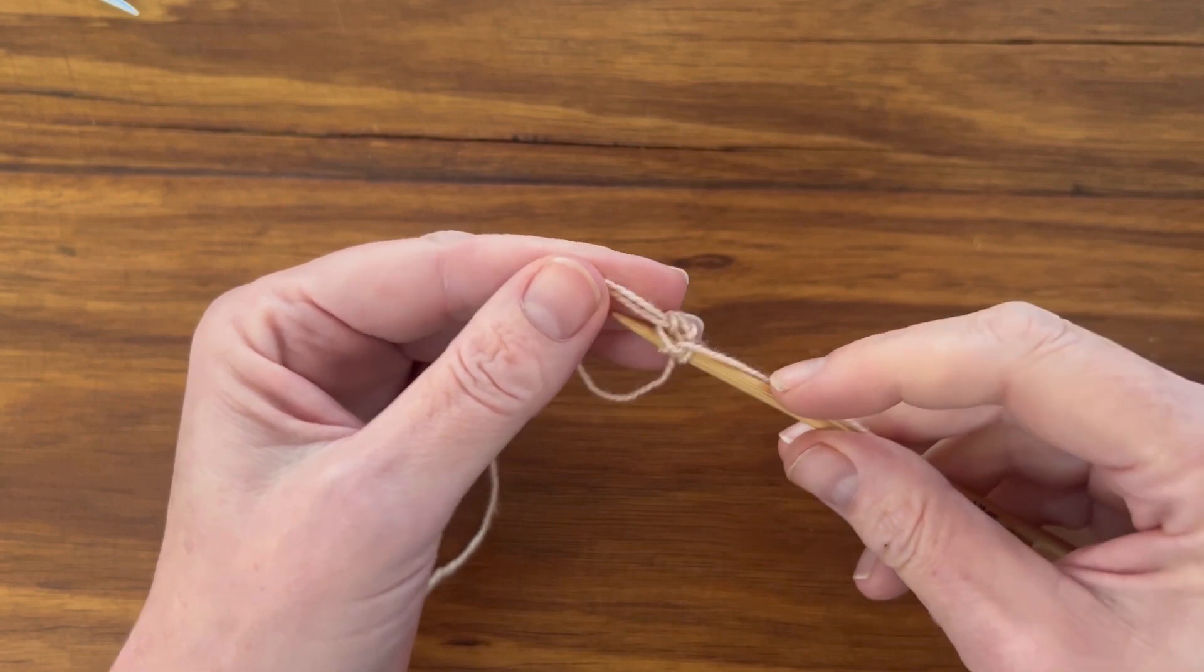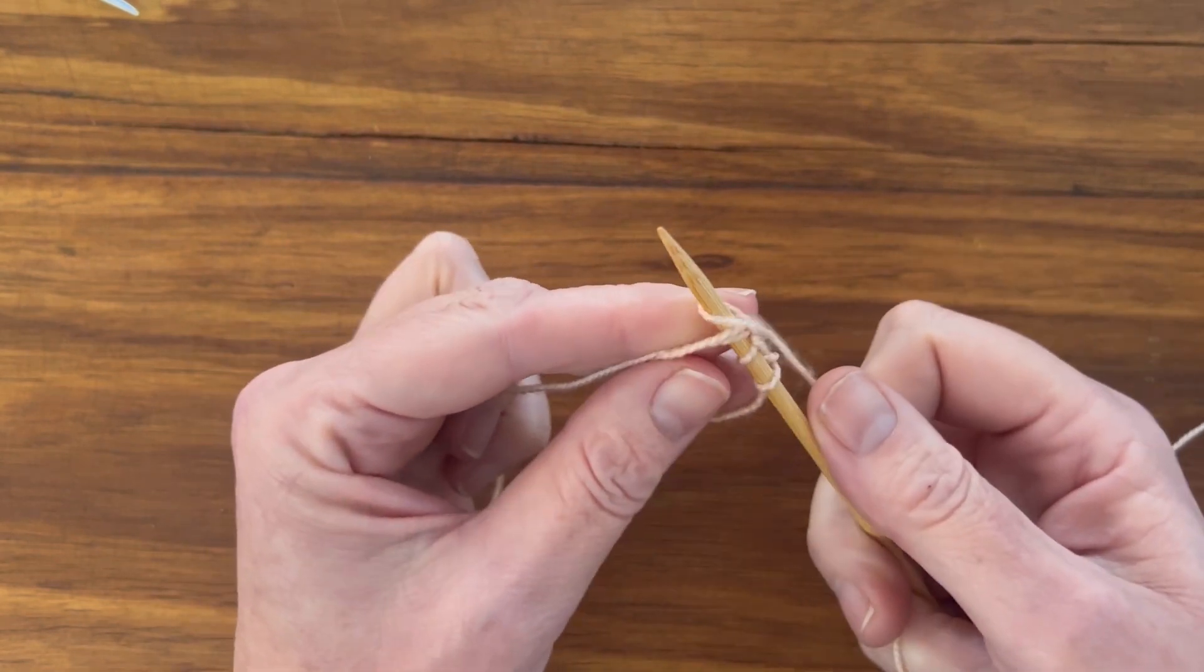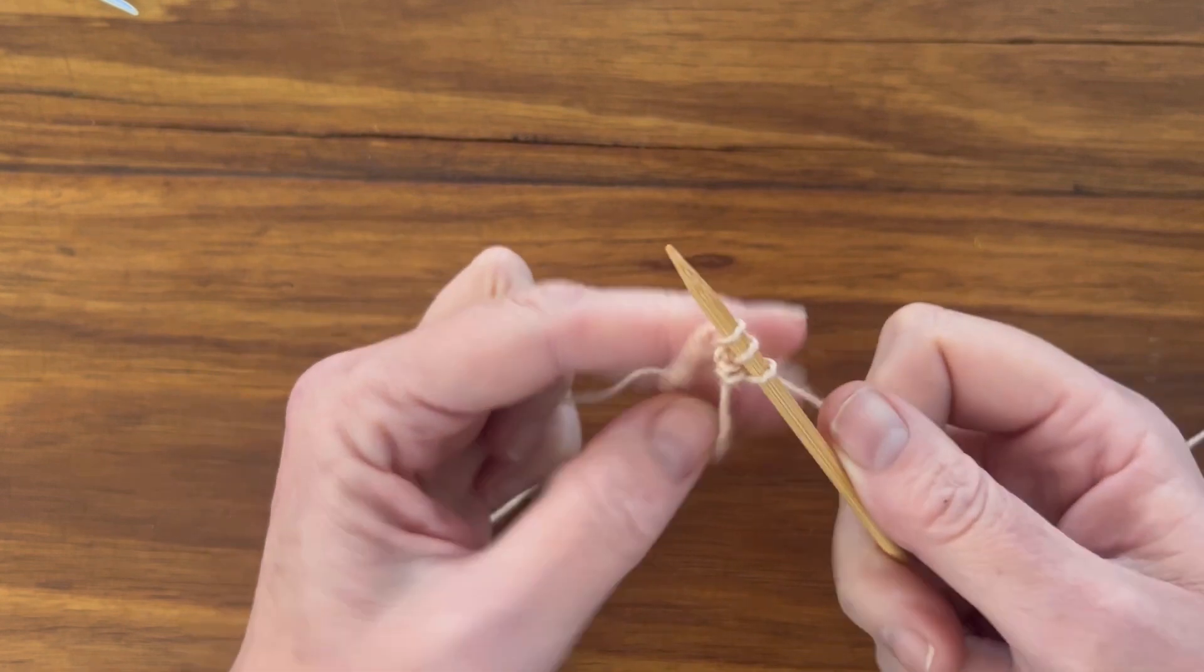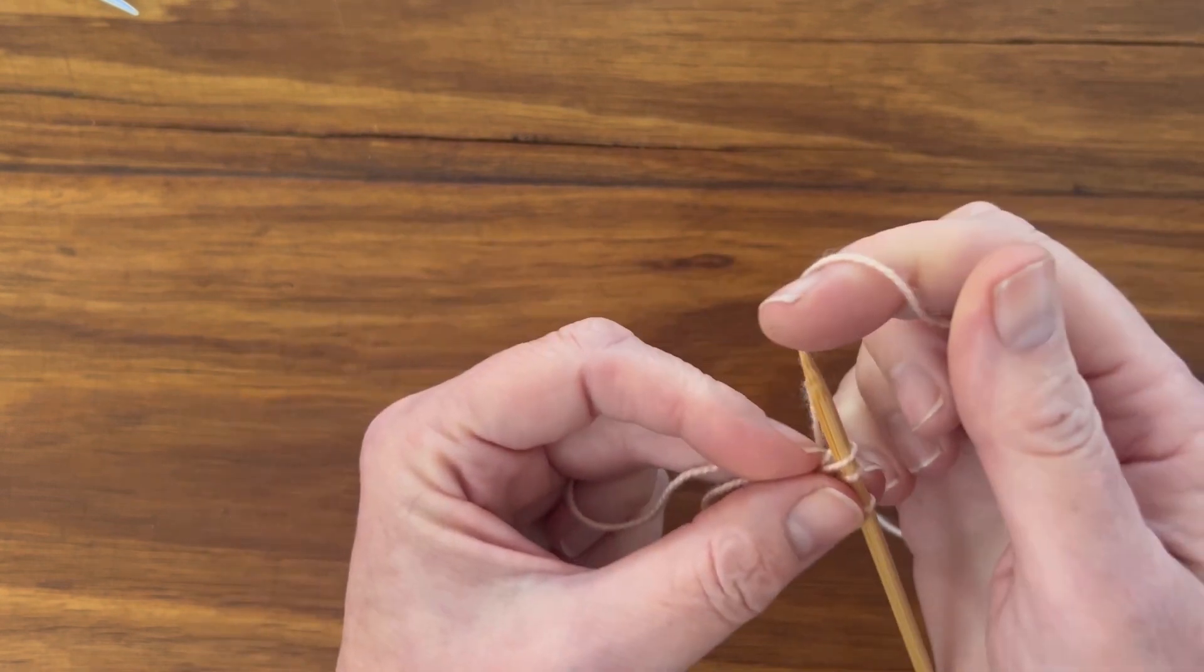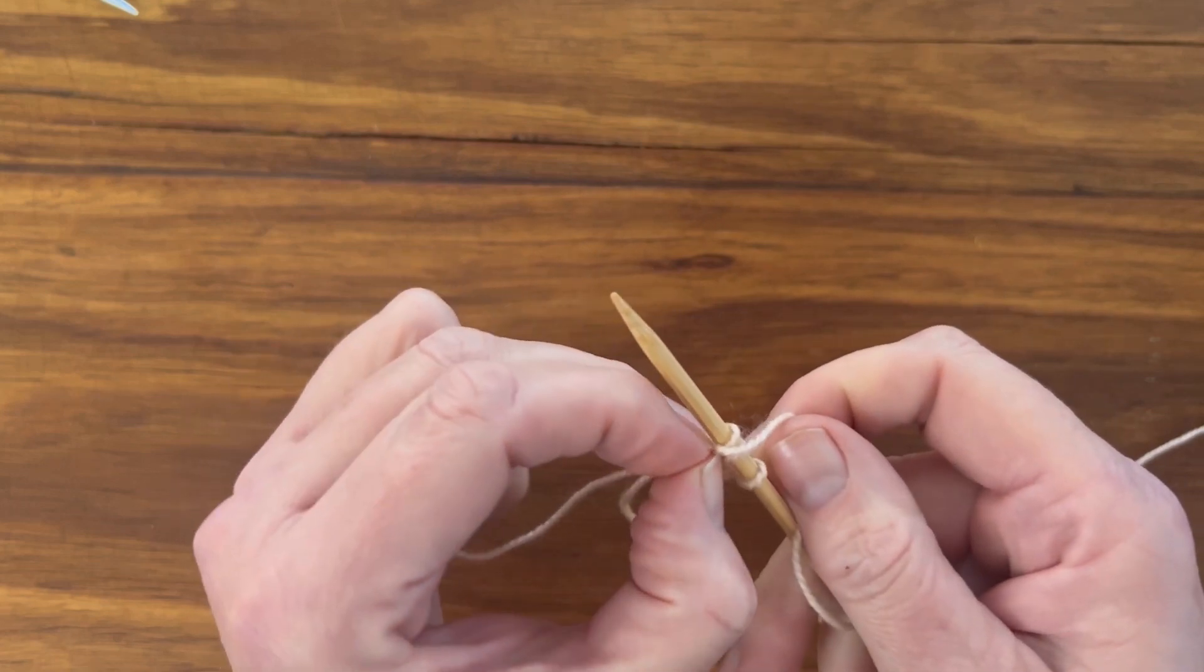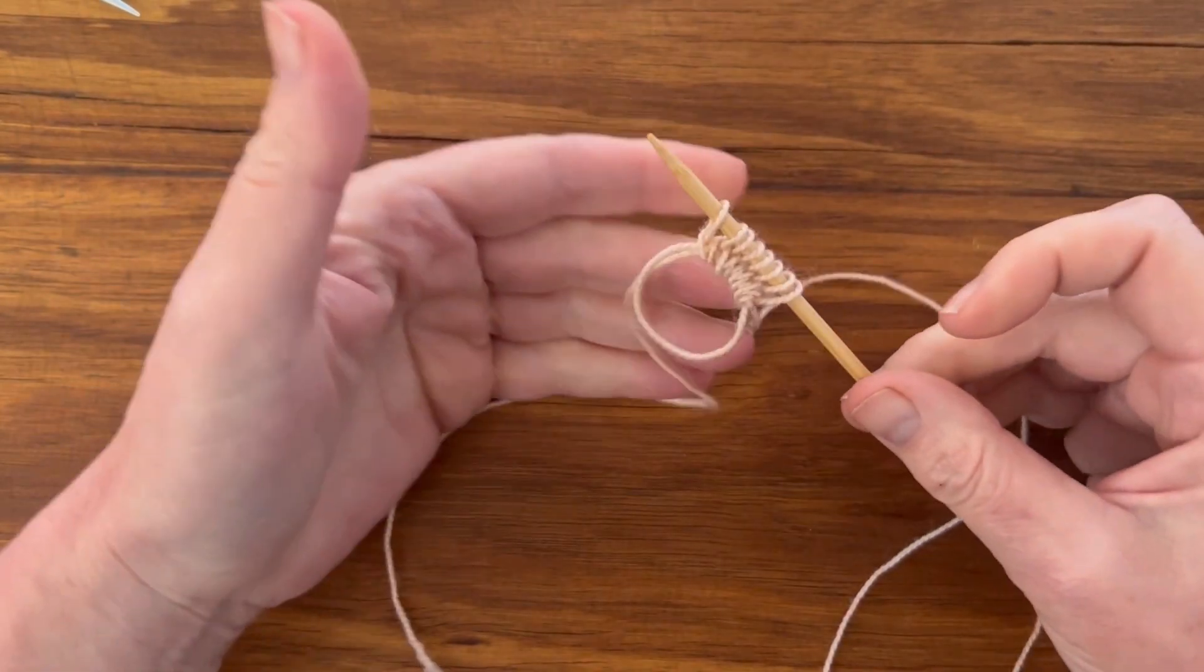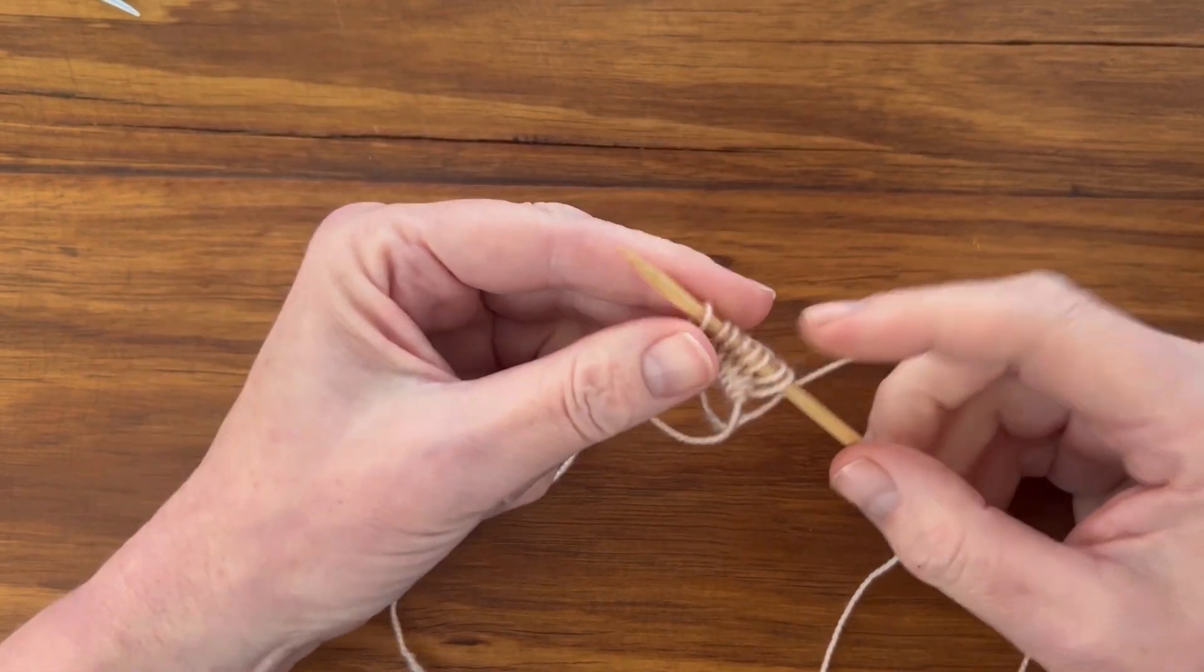Insert the needle through the loop. Work a yarn over. Pull that through the loop. Work another yarn over. And pull that just worked stitch over the yarn over. And continue until you have the required number of stitches.